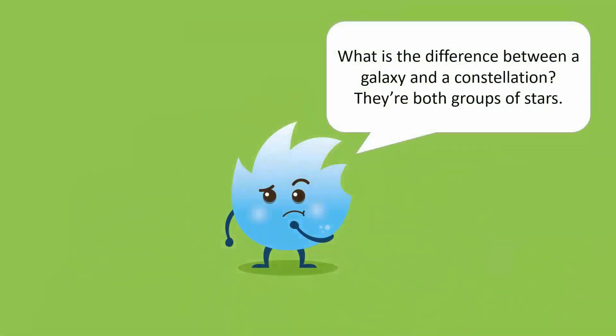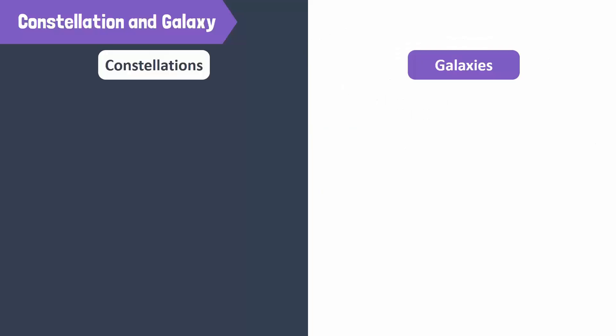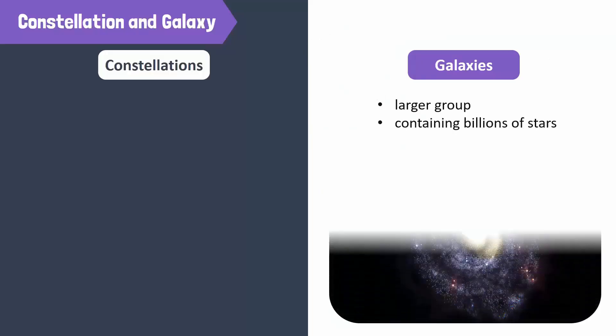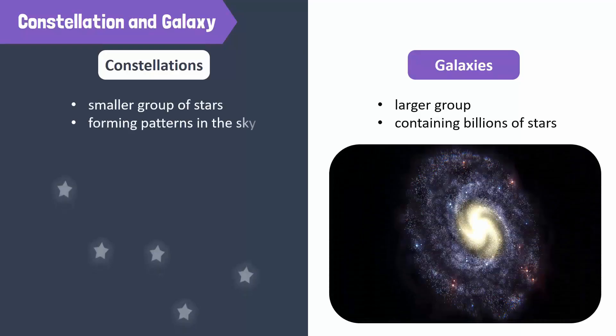What is the difference between a galaxy and a constellation? They are both defined as a group of stars. Yes, but a galaxy is a larger group containing billions of stars, and a constellation is a smaller group of a few stars forming a pattern in the sky.